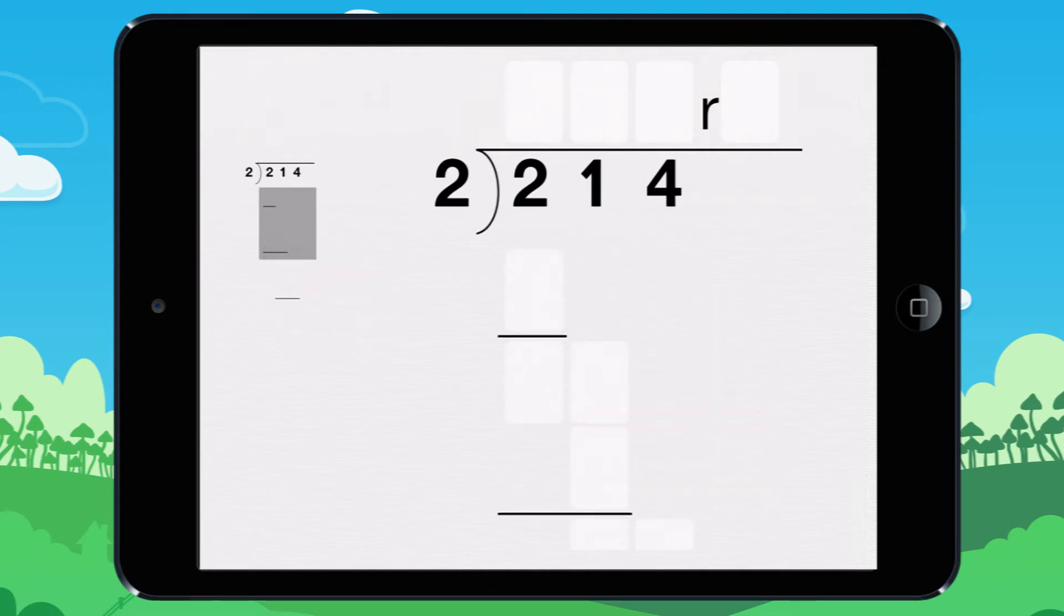How many times does 2 go into 2? It goes into that number once, says 1 times 2 equals 2. We need to find the remainder. 2 minus 2 equals 0. The remainder is 0.